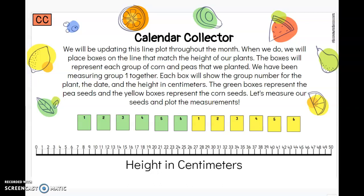The boxes will represent each group of corn and peas that we planted. Remember, we planted more than what we just measured together — we have been measuring group one together. Each box will show the group number for the plant, the date, and the height in centimeters. The green boxes represent the pea seeds and the yellow boxes represent the corn seeds. Now we've already measured our seeds, so let's plot the heights.